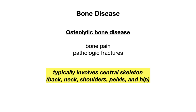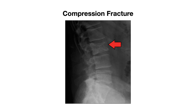The last of the CRAB findings is bone disease, specifically osteolytic bone disease, which can lead to bone pain as well as pathologic fractures. Bone disease typically involves the central skeleton — think back, neck, shoulders, pelvis, and hip. In this image of a patient's spine, you can see the red arrow pointing to a compression fracture, which can be found in patients with multiple myeloma.